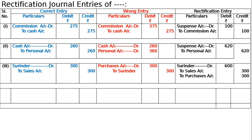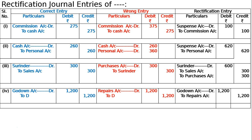Fourth entry: D's bill for erection of a godown at a cost of ₹1200 has been charged to repairs account. The correct entry is godown account (or building account) debited to D, ₹1200. By mistake it was done as repairs account debited to D, ₹1200. Hence the rectification entry is: godown account debited and repairs account credited ₹1200 — to cancel the mistake and bring in godown. Narration: godown construction bill charged to repairs account is now rectified.